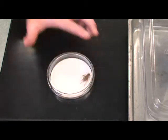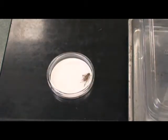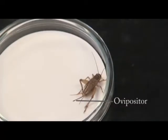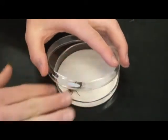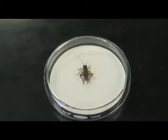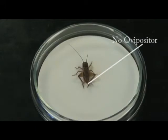The following cricket can be identified as a female due to the presence of the ovipositor. The next cricket can be identified as a male due to the absence of the ovipositor.